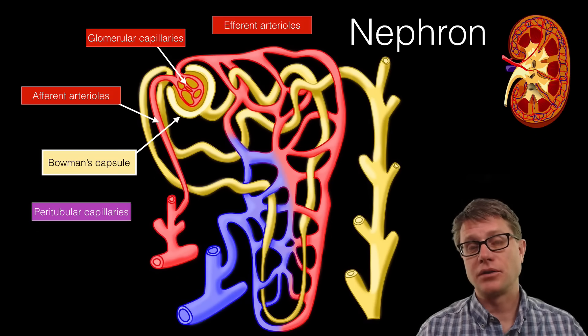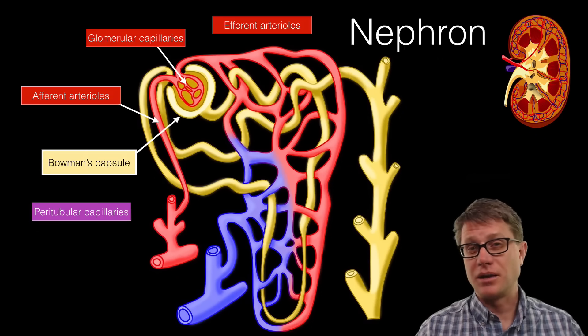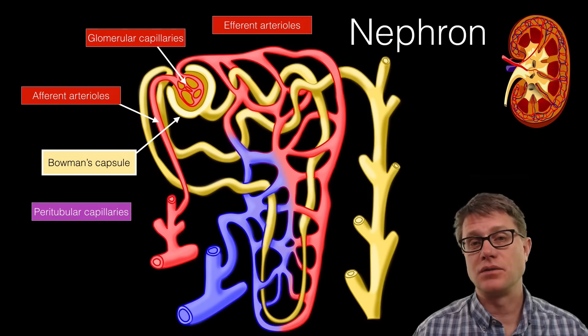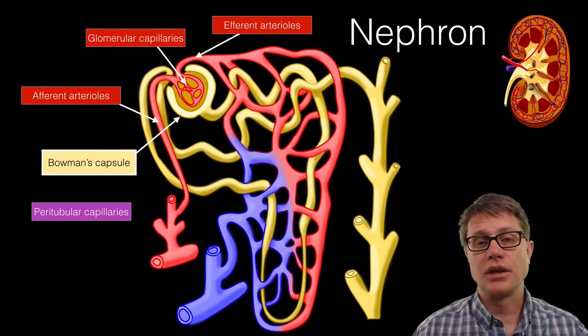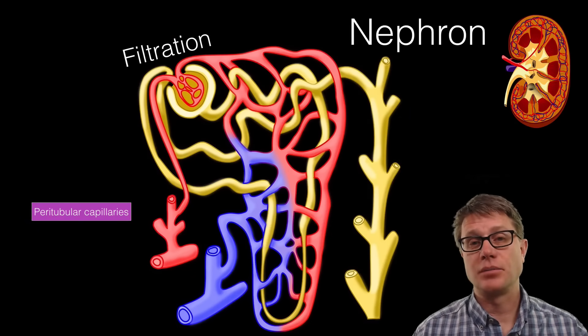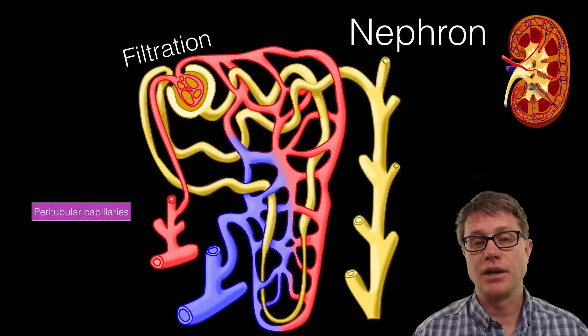At this point we have filtration occurring. A lot of that blood plasma is squirting out of the capillary and eventually moving into the urinary system. From there the blood goes through the efferent arteriole. So at this point we've got filtration taking place—this is where we're actually filtering the blood.